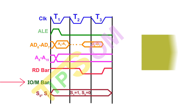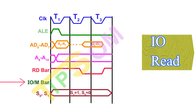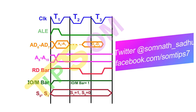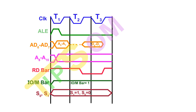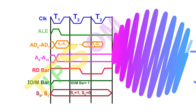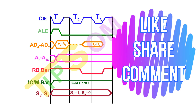Now I'm going to the input/output read timing diagram. For IO read, all signals will be the same as memory read — only the IO/M bar will change. Because it is an I/O operation, IO/M bar will be 1. The rest of the signals remain the same as memory read. In the IO read operation, instead of reading from a memory location, the processor takes the value from an input/output port address.